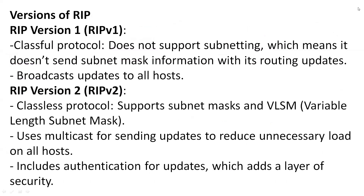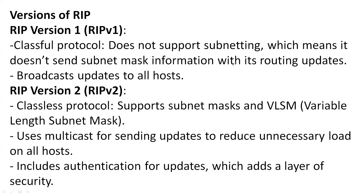There are two versions of the Routing Information Protocol. RIP version 1 is a classful protocol, meaning subnetting is not supported. It forwards broadcast updates to all hosts — every time, broadcast messages are forwarded because multicast had not been introduced in RIP version 1.